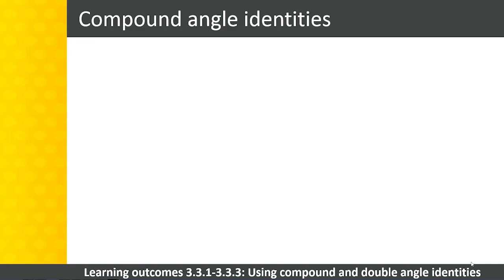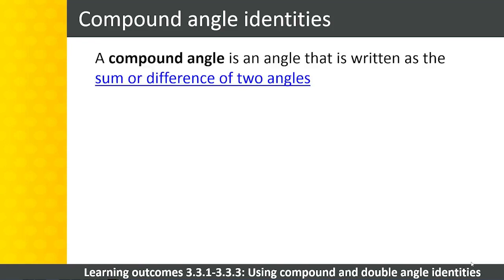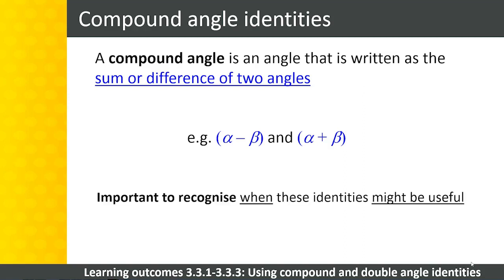We now move on to the new work in trigonometry for this level. A compound angle is an angle that is written as a sum or difference of two other angles. Any angle can be written in this way, but the important thing is to recognize when it is useful to do so and to apply the identities.